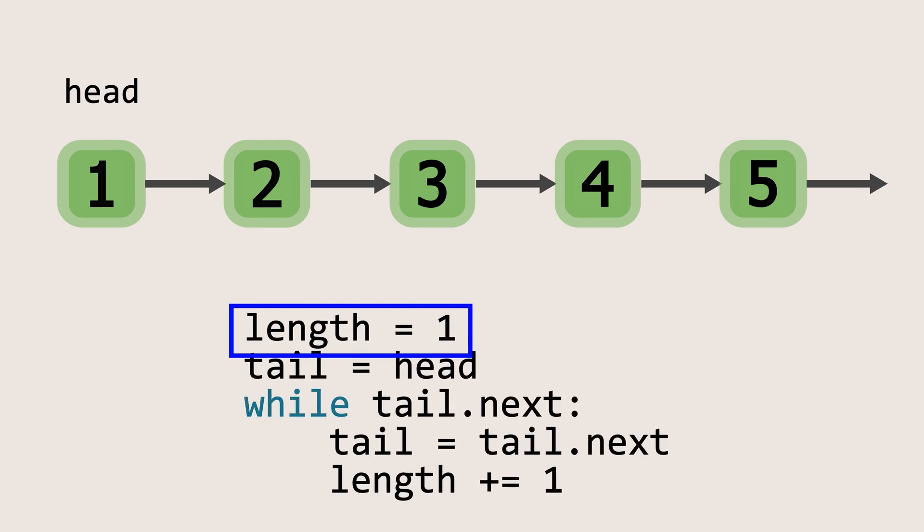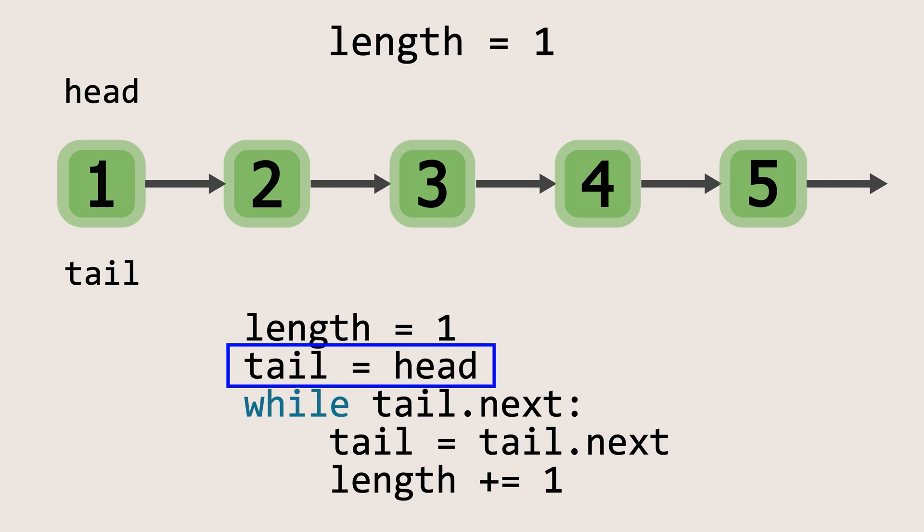First we create a variable called length which we initialize to 1. Then we define another variable tail and set it to the head of the list. Now, we use a while loop to traverse the list. This loop will run as long as the next element of the tail is not none.